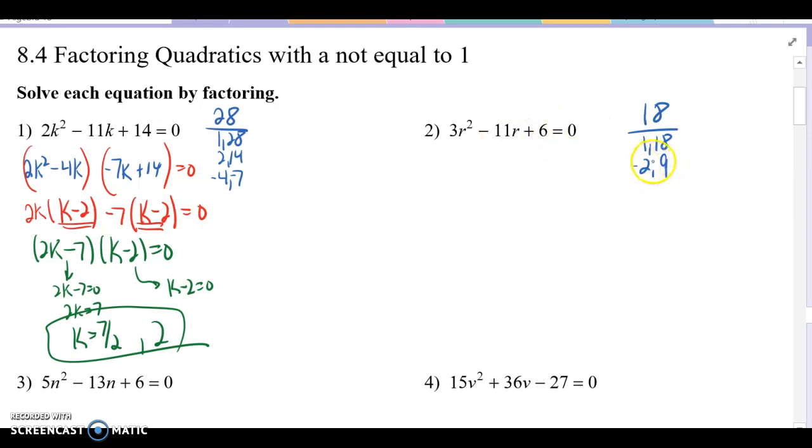We want a negative 11. So then if these are both negative, they still multiply to positive 18. Now they add to negative 11. So we're going to use those two terms to split this middle term. 3r squared still leads off the way. This negative 11r is now negative 2r, negative 9r, and plus 6 equals 0. So all we did is we changed this term into those two.